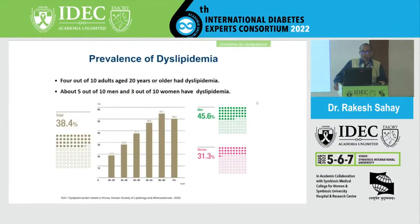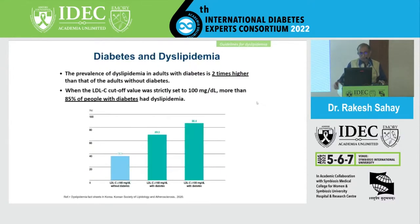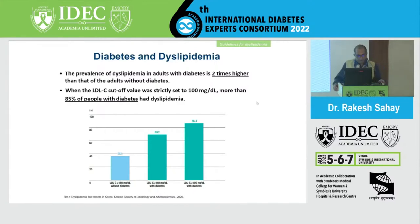If you look at the prevalence of dyslipidemia in the general population, it is probably 40 percent overall, with males tending to have a higher prevalence compared to females. But diabetics tend to have a much higher prevalence. With an LDL cutoff of 100, there is a significant number with dyslipidemia. Data from the ICMR INDAP study has shown that almost 85 percent of individuals have either elevated LDL cholesterol, elevated triglycerides, or low HDL cholesterol — with low HDL being the commonest abnormality.